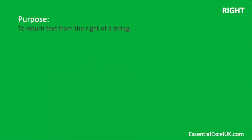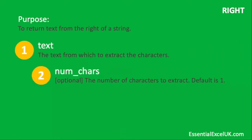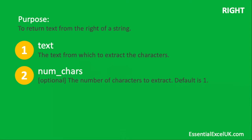Moving on to RIGHT — it will be very much a spot-the-difference with this slide versus the last one. The purpose of RIGHT is to return text from the right of a string. It is also made up of two parts: the text, which is the text from which to extract the characters, and the number of characters, which is again optional. If you don't put a value in, it defaults to one. LEFT and RIGHT are exactly the same layout and format; the only difference is the purpose — one extracts characters from the left of a string and the other from the right.